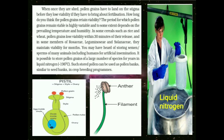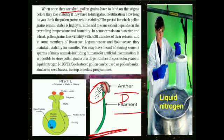Next, when once pollen grains are shed — matlab plant se release ho jaate hain — unhe stigma par land karna padta hai. Stamen ke andar anther aur filament hote hain, anther ke andar pollen grains present hote hain. Jaise hi anther mein dehiscence ki process hogi — anther burst hoga — toh pollen grains release honge. Inhe stigma par transfer hona hoga; stigma pistil ya carpel ka part hai — the female reproductive part. Transfer of pollen grains from anther to stigma is known as pollination.